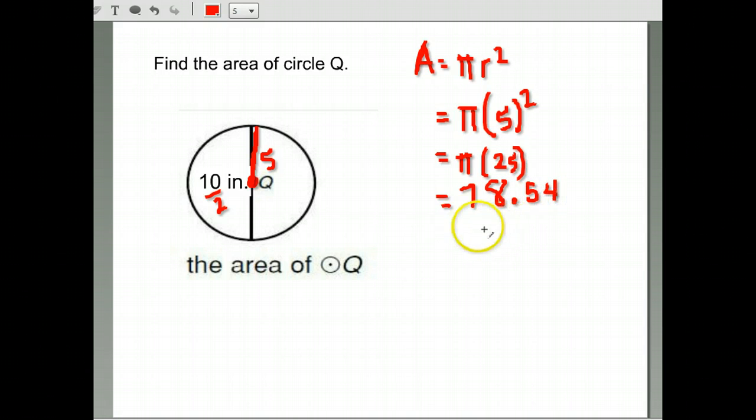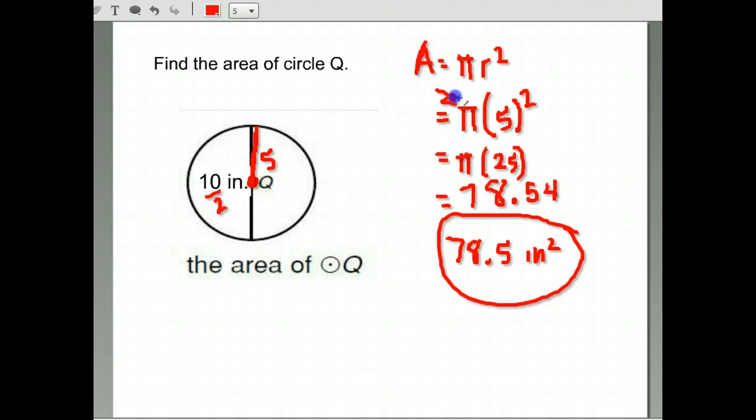And pi times 25 is 78.539. I'm going to round it off to just 78.5, and that would be square inches. Remember, using the pi button on your calculator is going to give you the most accurate answer possible.